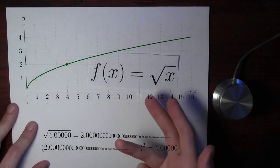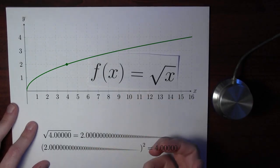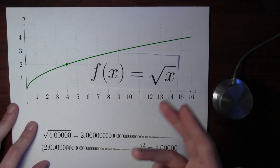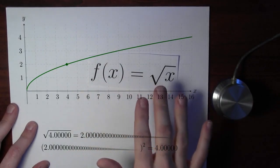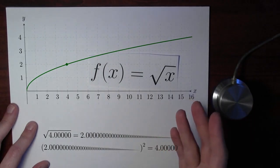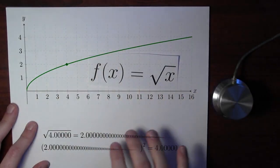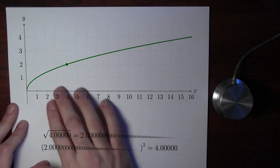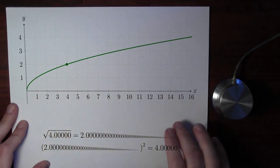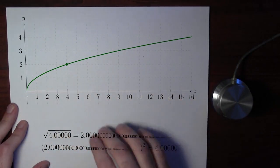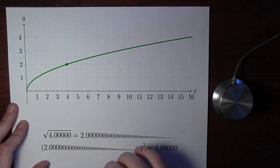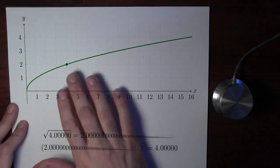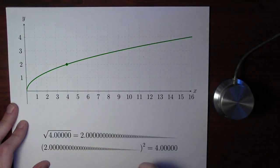Before we talk about the domain of the square root function, I just want to remind ourselves what the square root function even is. Here I've made a graph of the square root function, and along the x-axis I've plotted the numbers 1 to 16, on the y-axis I've got the numbers 1 to 4, and in this green curve here I've plotted the square root function.